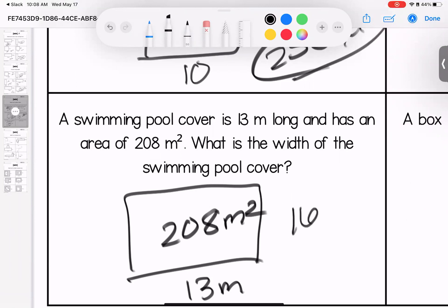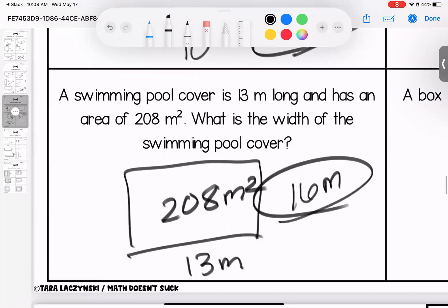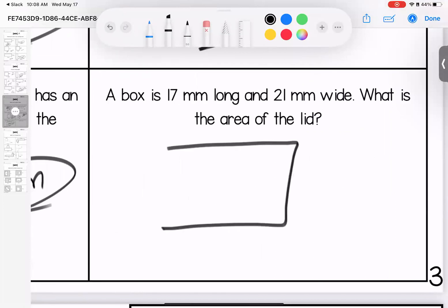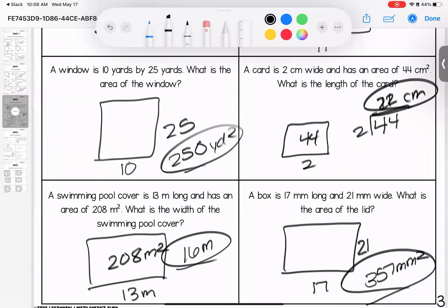We're missing 16 meters. A box is 17 by 21 and I want to know the area. 17 times 21 gives me an area of 357 millimeters squared. If you have questions on these, go ahead and bring them with you to class.